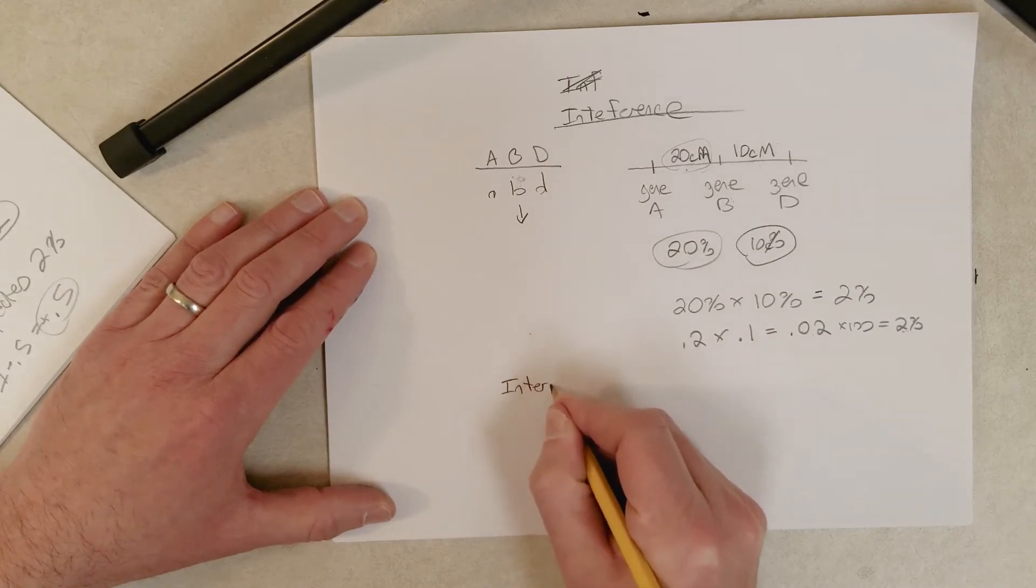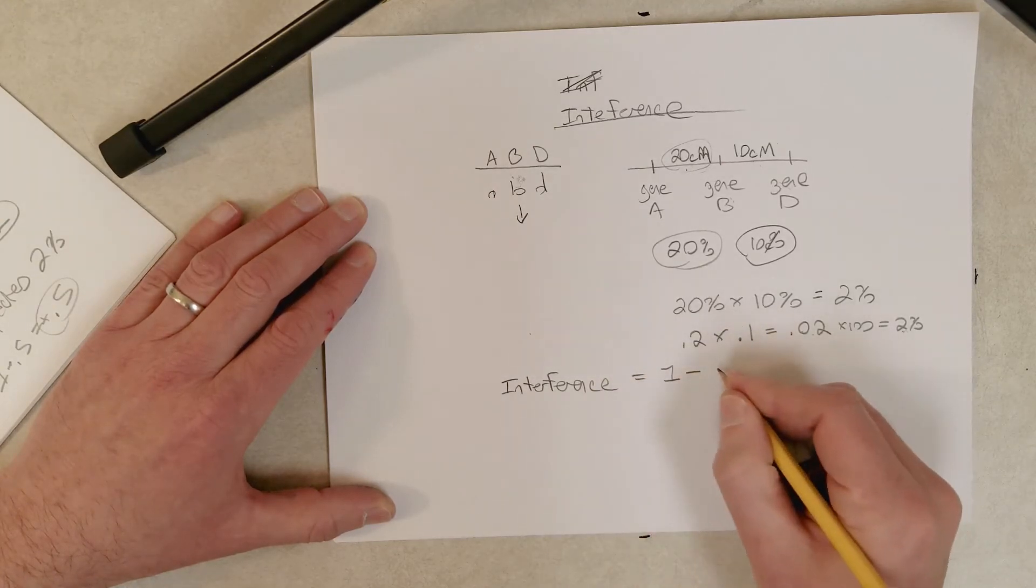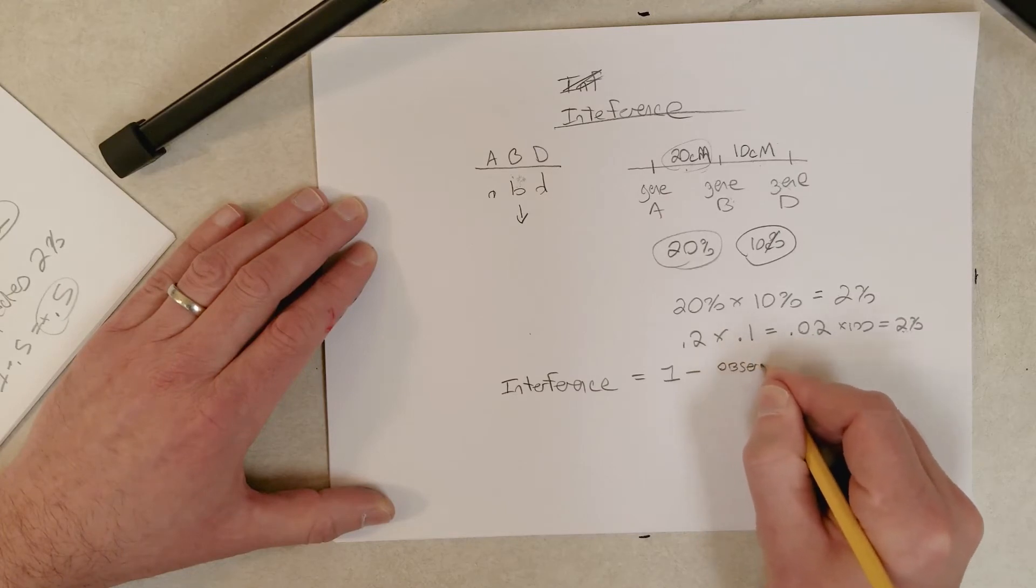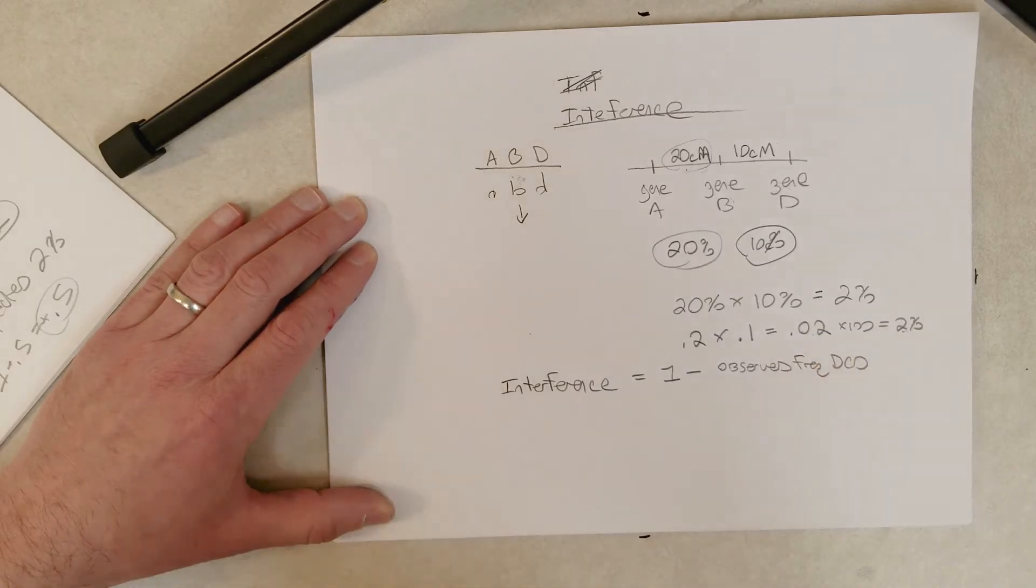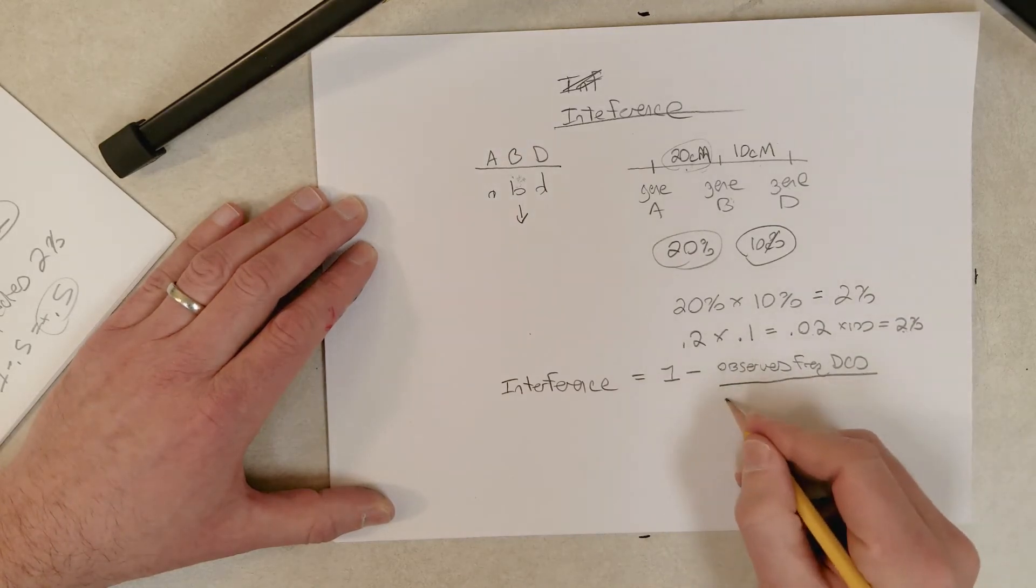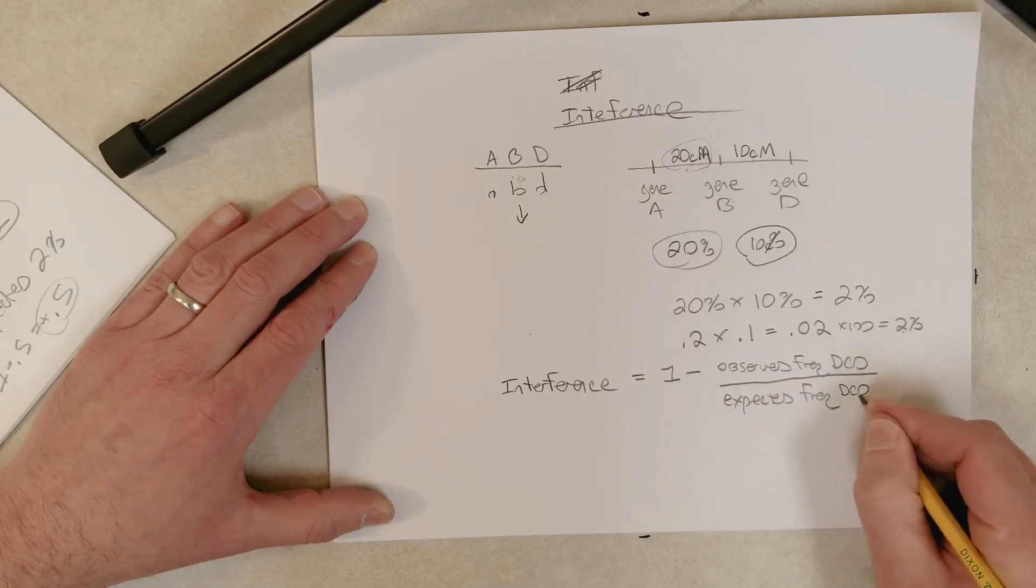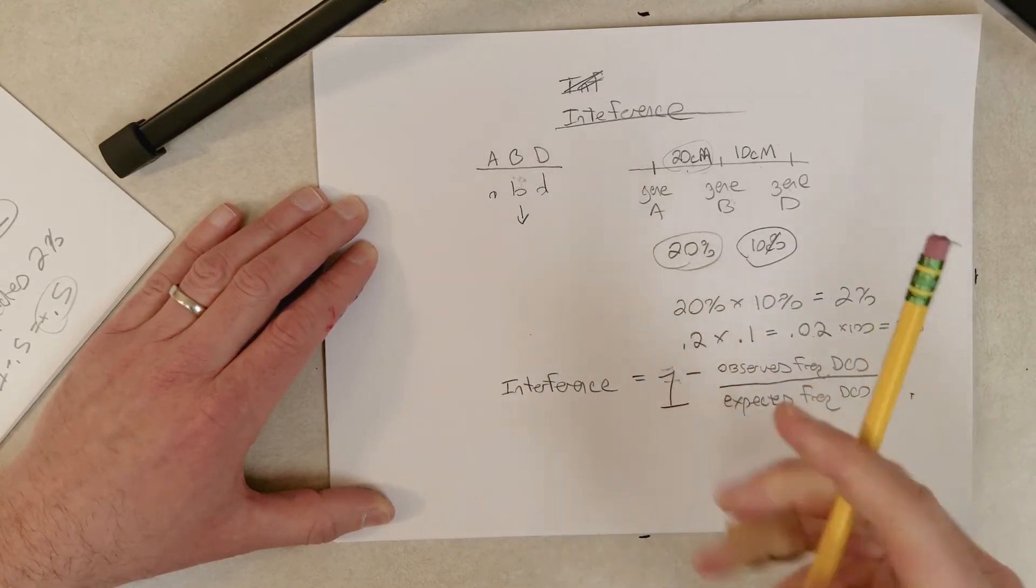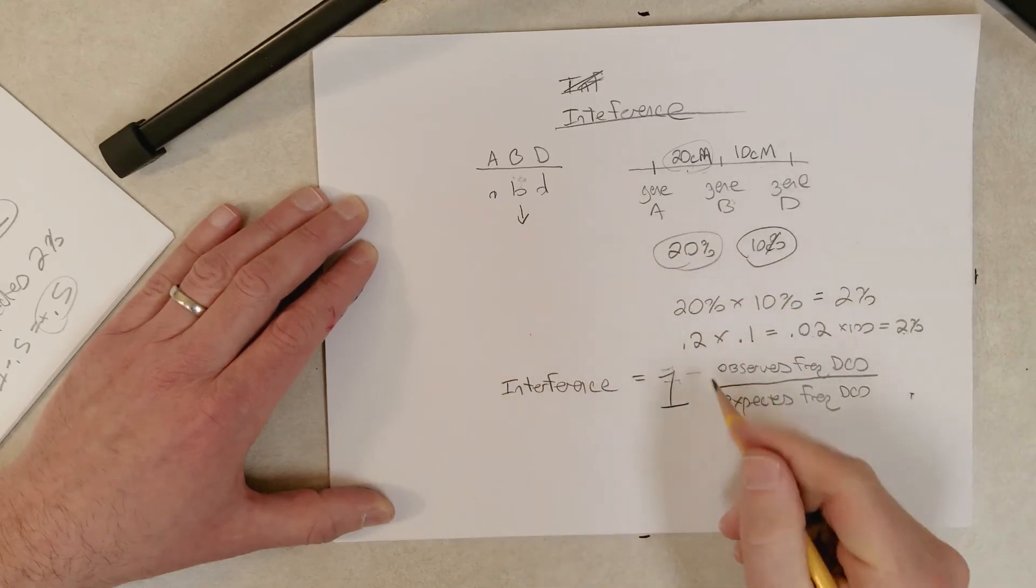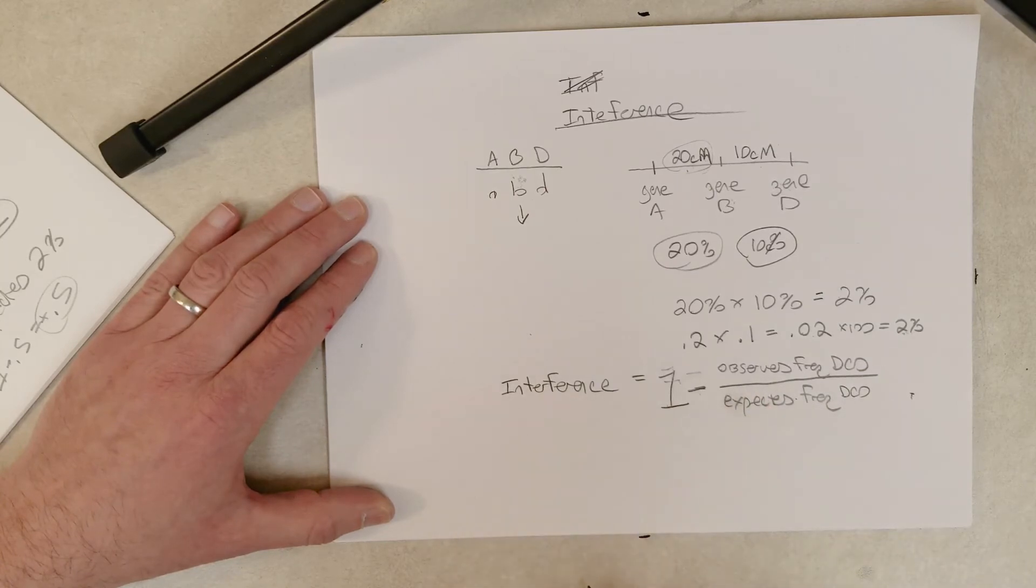Interference equals 1 minus the observed frequency of double crossovers, you can just use percentage, divided by the expected frequency of double crossovers. The order of operations is calculate this value first, and then 1 minus that value equals the interference.